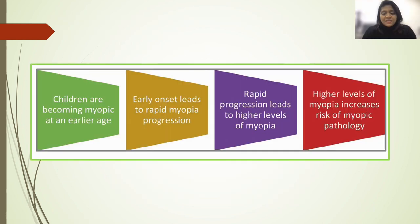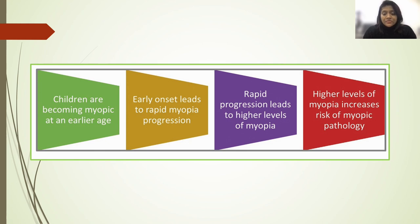Another inference from this study is that children are becoming myopic at a very early age, and early onset leads to rapid myopia progression, which leads to high levels of myopia, and of course high levels of myopia increase the risk of myopic pathology in the eye.